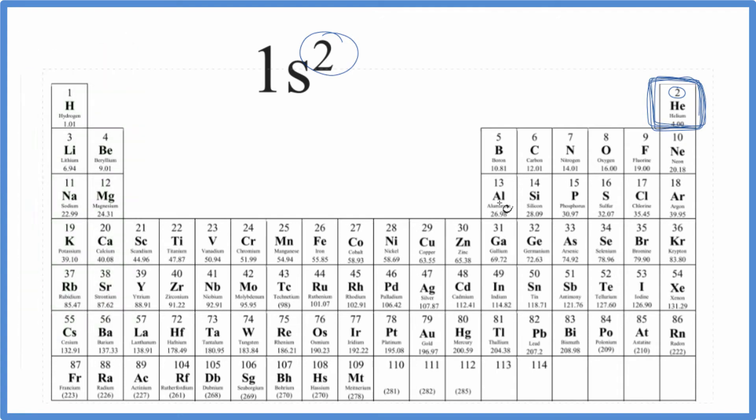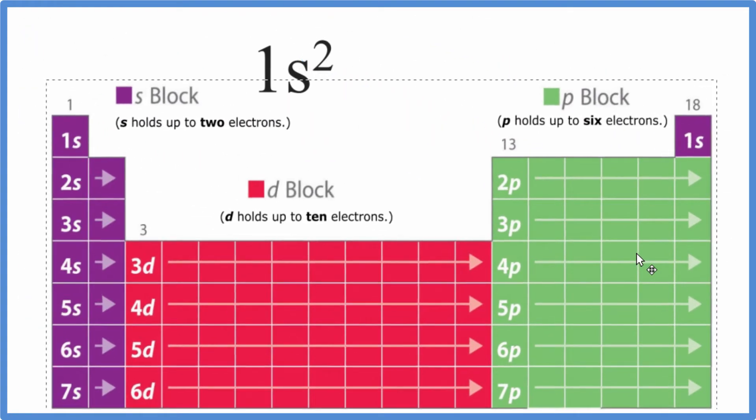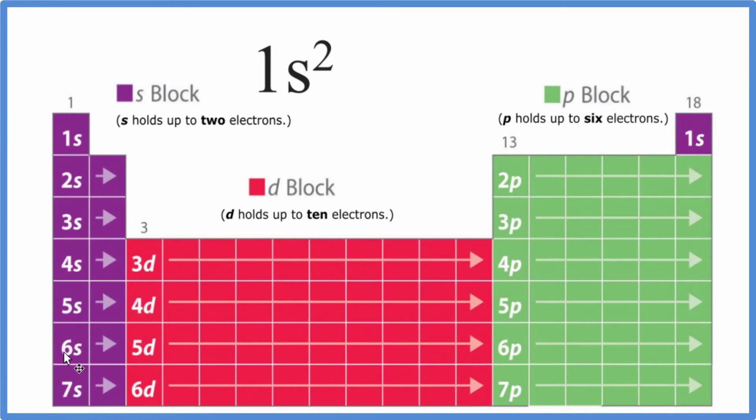There's another way we could do this. We could look at the periodic table divided into orbital blocks. So the first group here, group one on the periodic table, they all end in s1. Second group, s2.